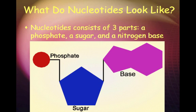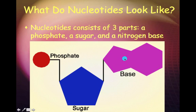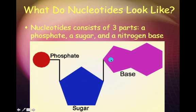Nucleotides consist of three parts: a phosphate, a sugar, and a nitrogen base. The phosphate is always a phosphate group, but the sugar and the base may change. In DNA, the sugar is deoxyribose, and the bases can be either A, T, C, or G. These are the building blocks of a nucleic acid — when you bond a bunch of them together in long chains, you end up with a nucleic acid.